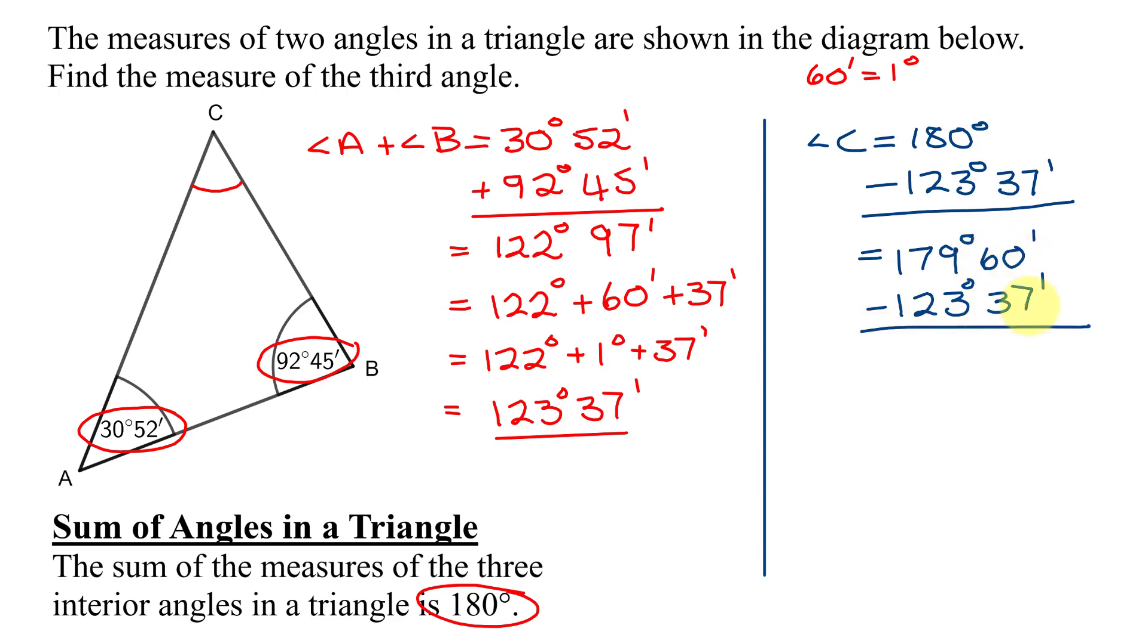60 minutes minus 37 minutes is 23 minutes. And 179 degrees minus 123 degrees is 56 degrees. So, I know the angle I'm looking for, the third angle in the triangle, angle C, is 56 degrees, 23 minutes.